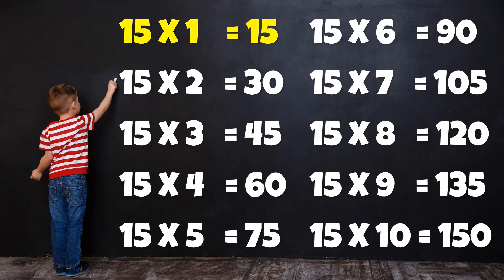Table of 15. 15 1's are 15. 15 2's are 30. 15 3's are 45. 15 4's are 60. 15 5's are 75. 15 6's are 90. 15 7's are 105. 15 8's are 120. 15 9's are 135. 15 10's are 150.